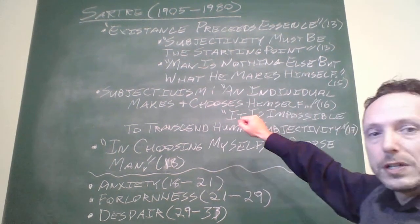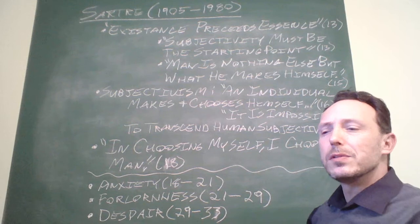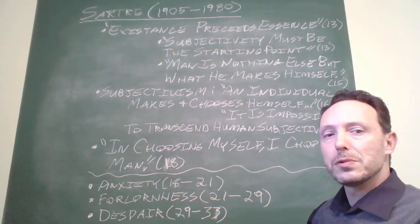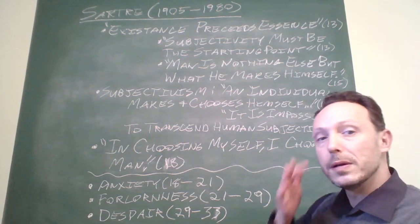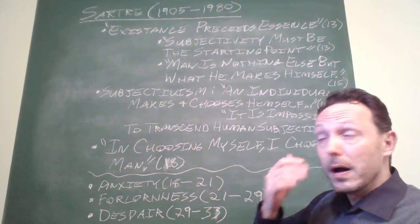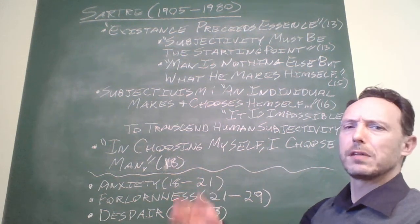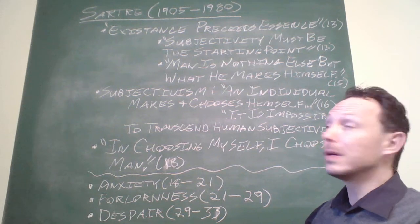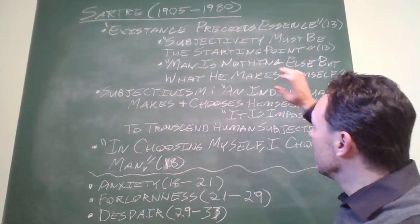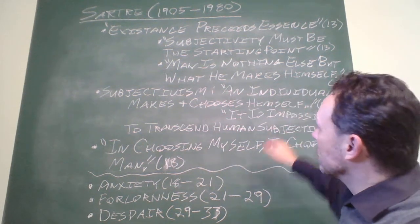This is what we call subjectivism, right, which is something that was at the time when Sartre was writing almost a dirty word. It's an accusation of existentialist position. Oh, that's just subjectivism. Where's the objective truth in all of this? Well, no.